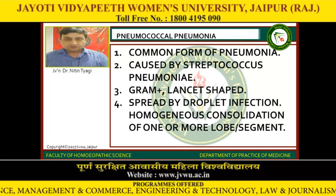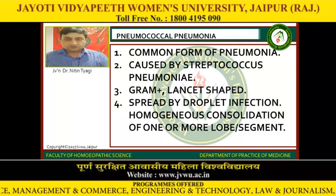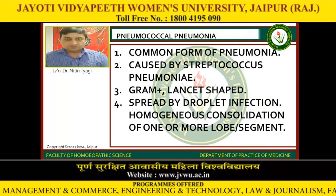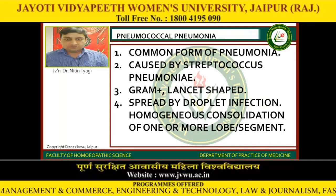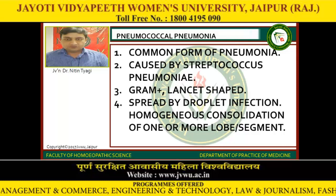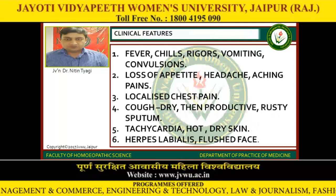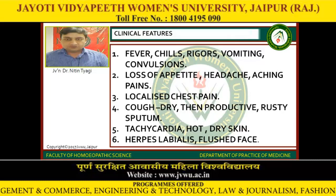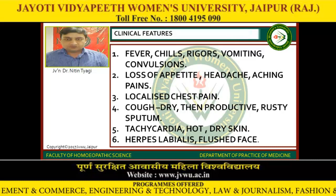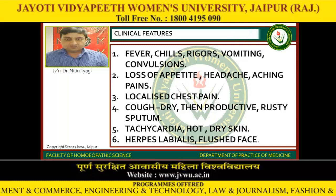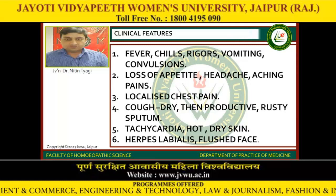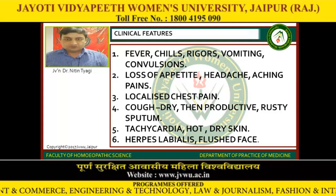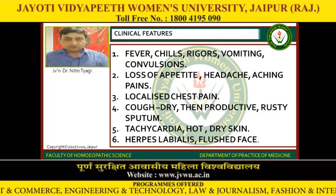Pneumococcal pneumonia is the common form caused by Streptococcus pneumoniae — Gram positive, lancet-shaped — spread by droplet infection, with homogeneous consolidation of one or more lobes or segments. Clinical picture: fever, chills, rigors, vomiting, convulsions, loss of appetite, headache, aching pains, localized chest pain, cough initially dry then productive. Rusty sputum, tachycardia, hot dry skin, herpes labialis, and flushed face.